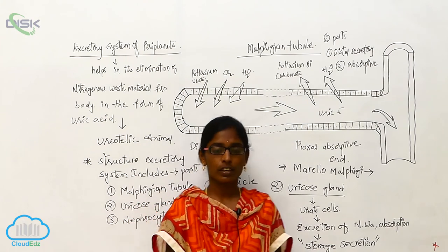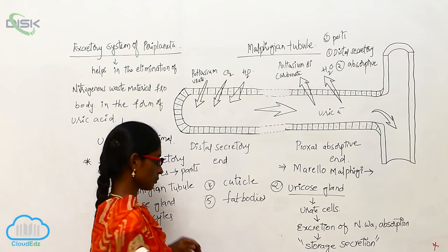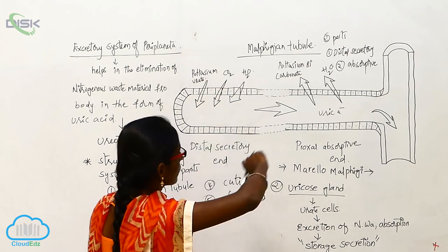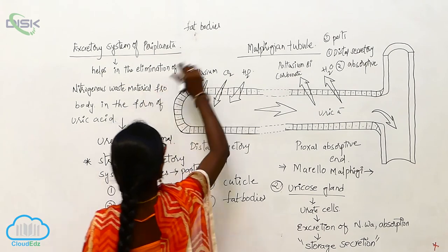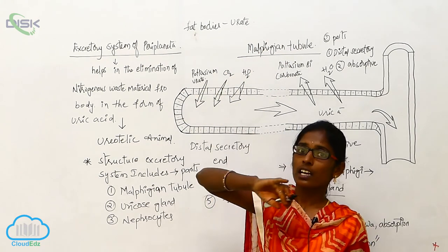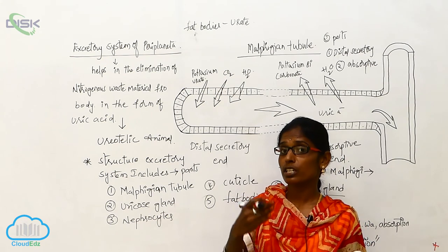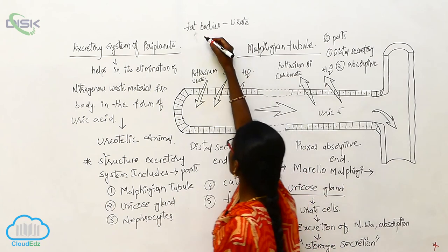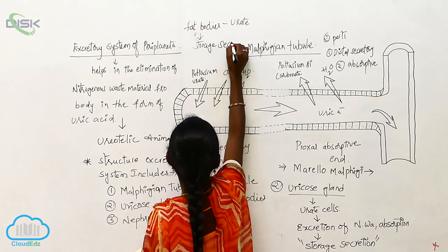The fat bodies also contain urate cells. These urate cells function in the excretion of nitrogenous waste material and also serve in the storage of uric acid. That's why fat bodies are also called storage secretion.